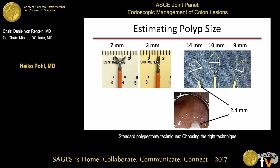I use the diameter of the snare—for example, 10 millimeters for the Olympus snare—to better estimate polyp size rather than guessing from a distance. The tip of the catheter, 2.4 millimeters, helps estimate polyp height and categorize morphology using the Paris classification. A 2.5-millimeter height separates protuberant polyps, Paris type 1, from flat polyps, Paris type 2. Knowing Paris morphology and pit pattern classification gives clues about whether invasive cancer is present.